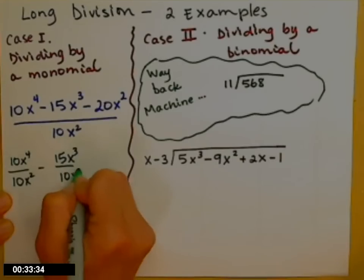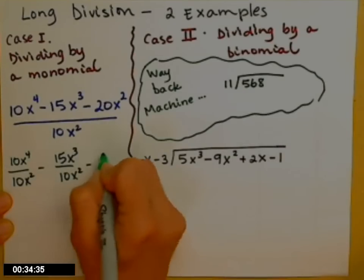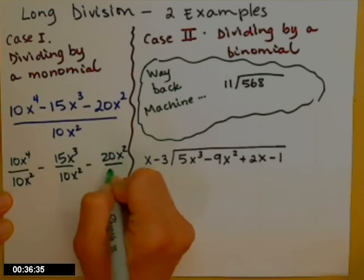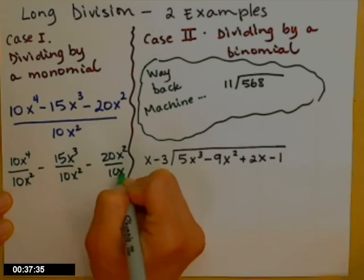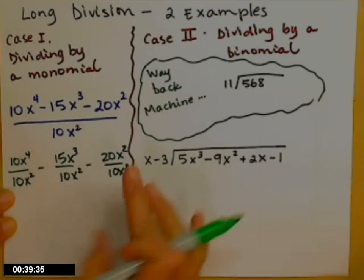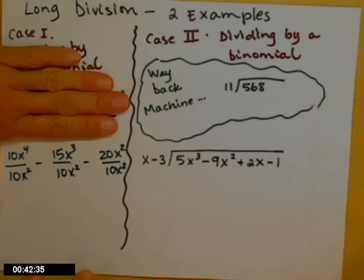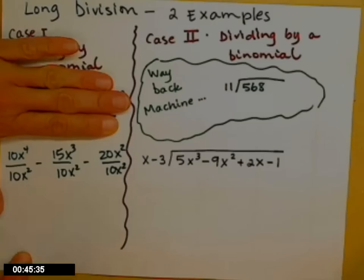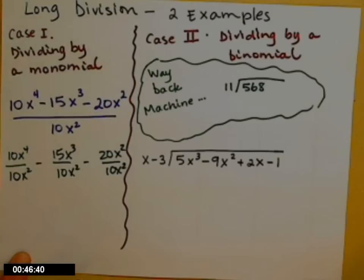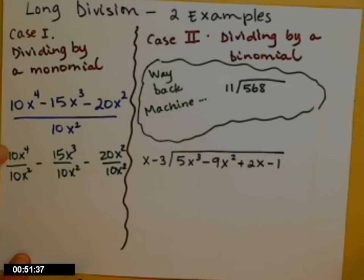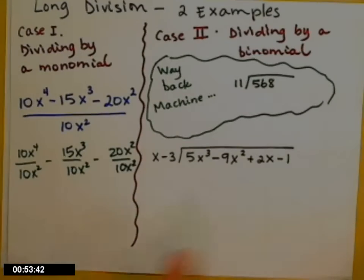This does not seem obvious at first, but hold on. Once you see it — notice if I gave you this one to start with and asked you to simplify, you'd say, oh look, they all have the same denominator, let's write that as one. Well, we don't want that. We want it split apart because now we can reduce each of those three fractions.